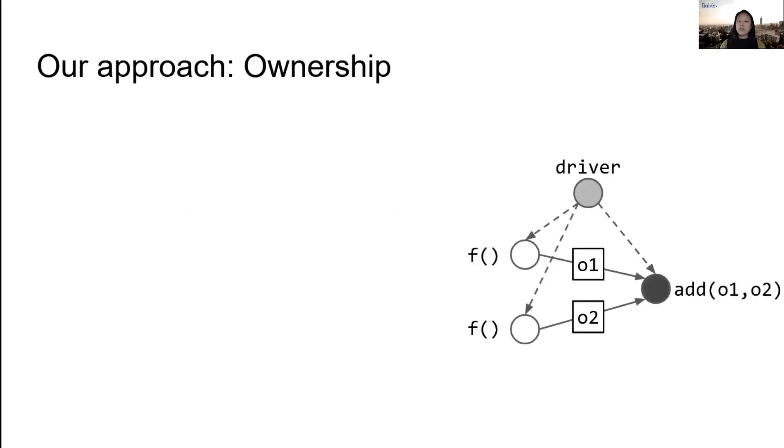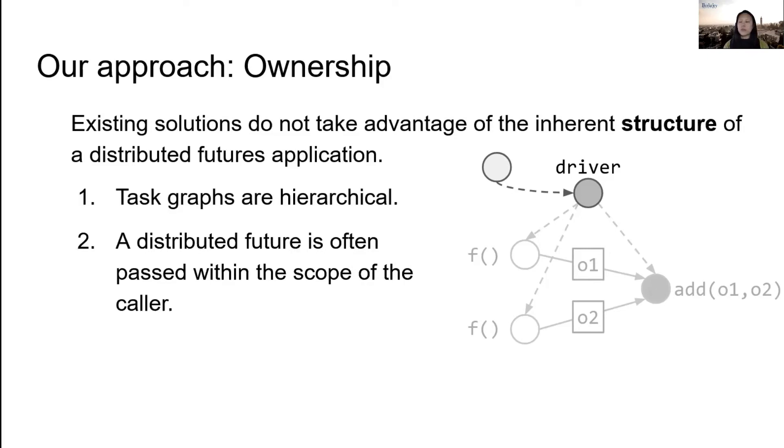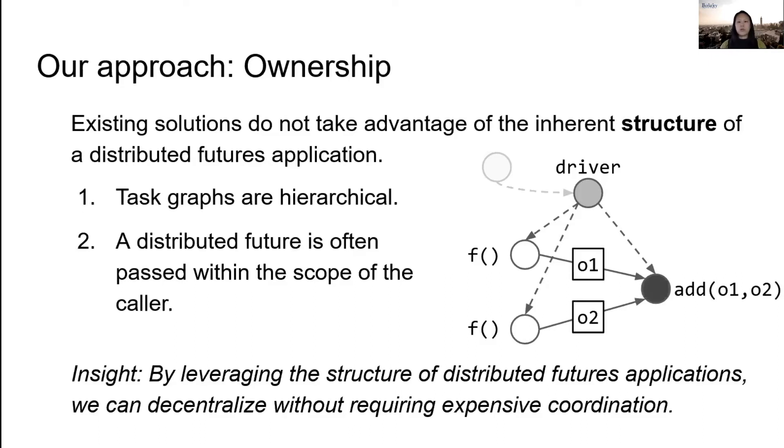Our key insight is that coordination is only expensive in existing solutions because they don't take advantage of the inherent structure of a distributed futures application. First, task graphs created through distributed futures are inherently hierarchical. In our earlier example, the program itself could have been invoked by a different RPC function, and these function invocations naturally form a tree. Second, although passing a distributed future by reference creates shared state between processes, in most cases the scope is limited. In our example, the driver only passes o1 and o2 in its local scope, meaning that its parent never sees these values. So by exploiting the inherent application structure, we can decentralize the system without having to coordinate between all processes. We just need to coordinate between the processes that actually share state.